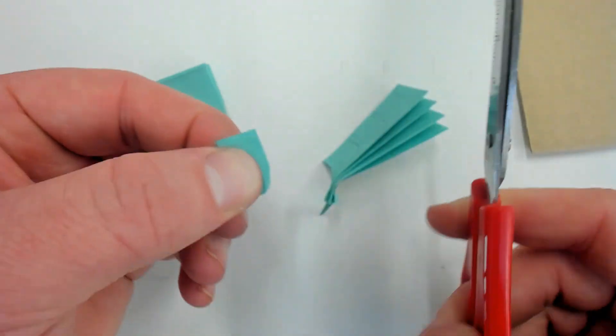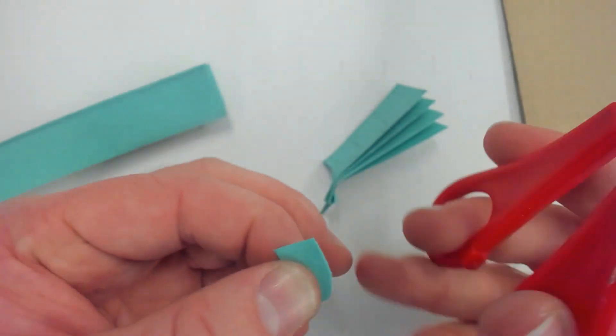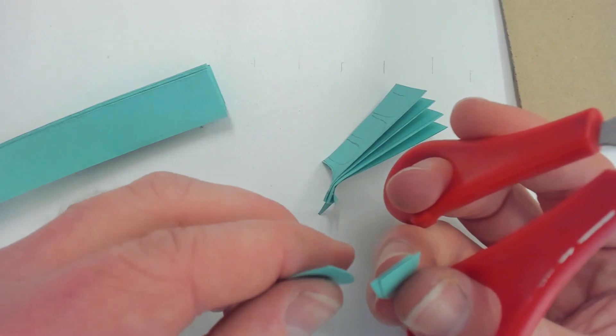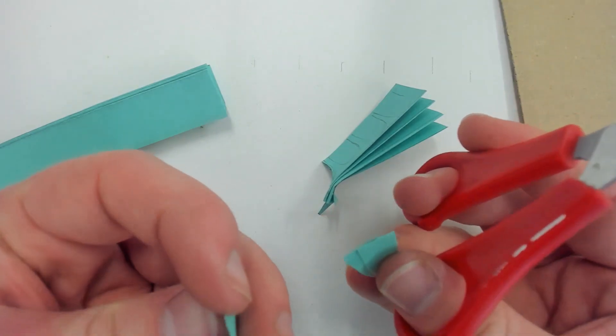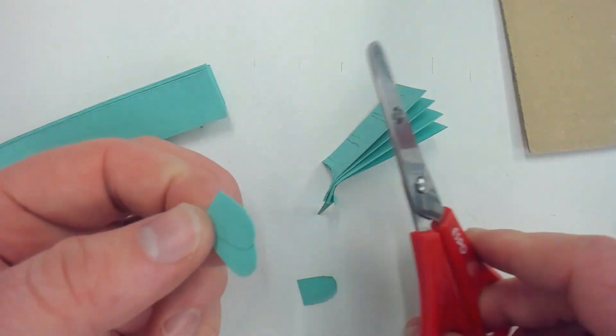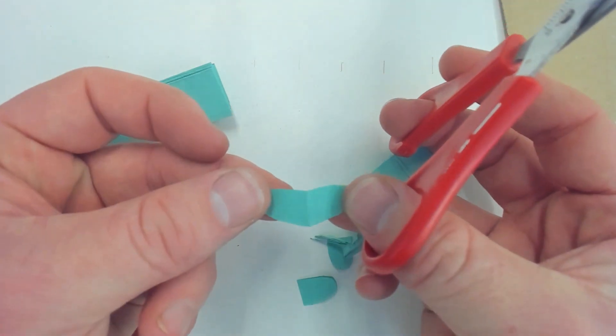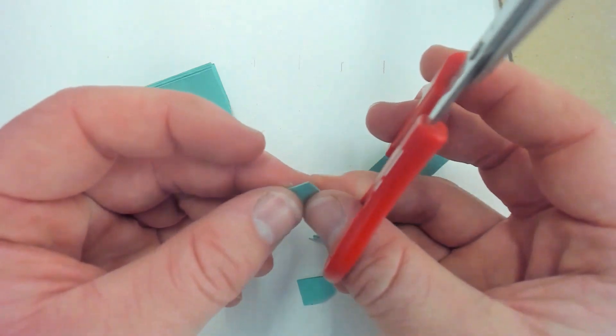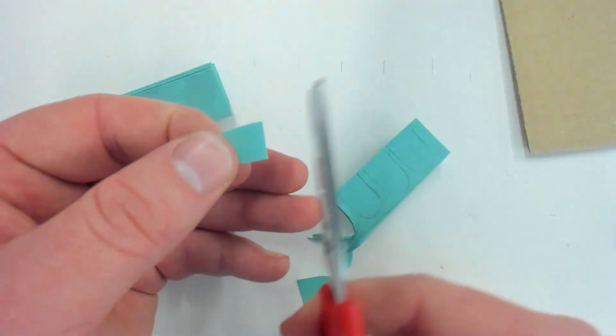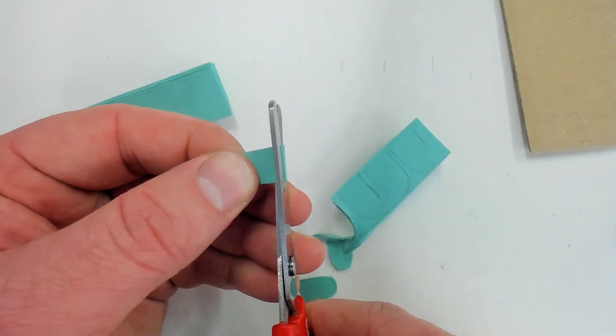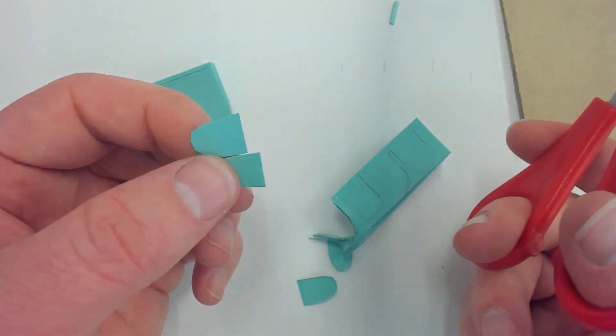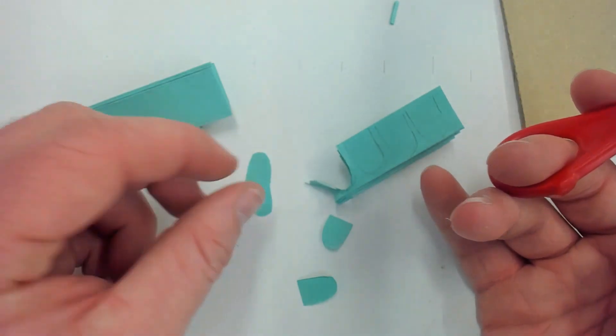But because there is a fold there, you'll find that these scales will have two in one. So what we need to do is cut off the bottom, just a little strip off the bottom, so we can use them separately. So we've got two scales rather than one that's stuck together.